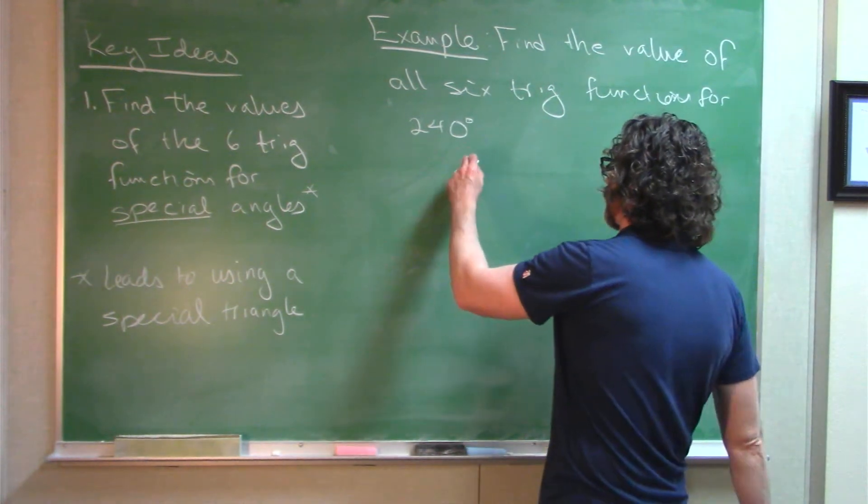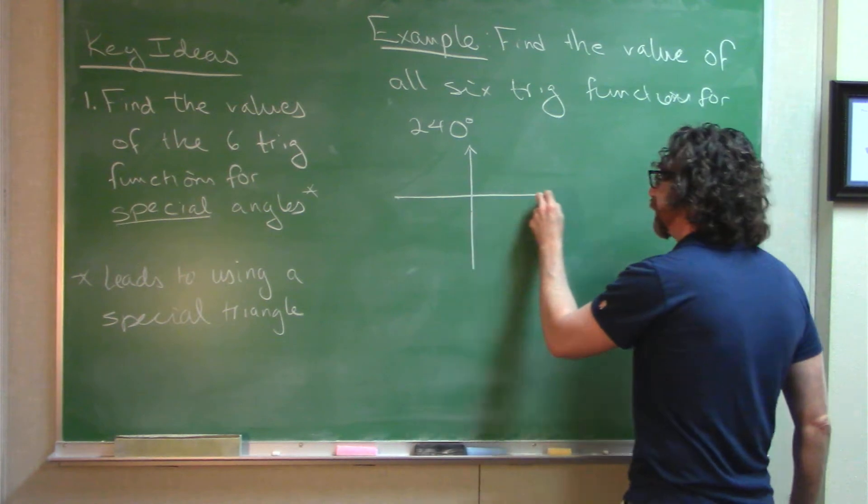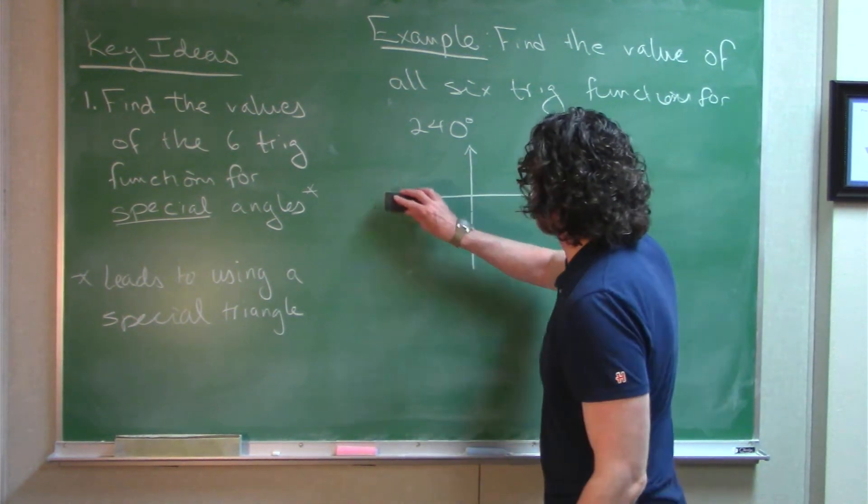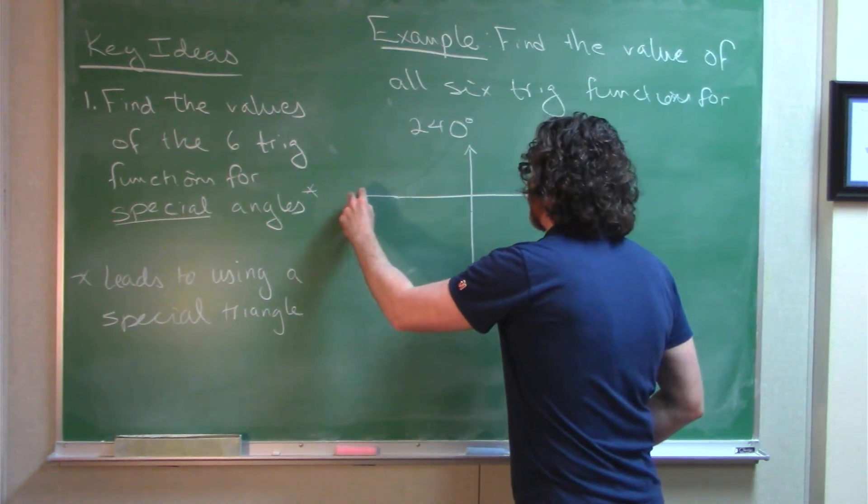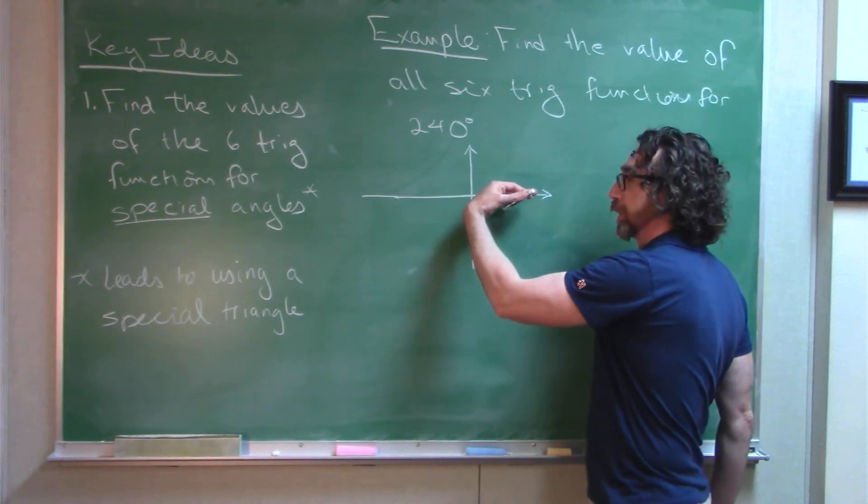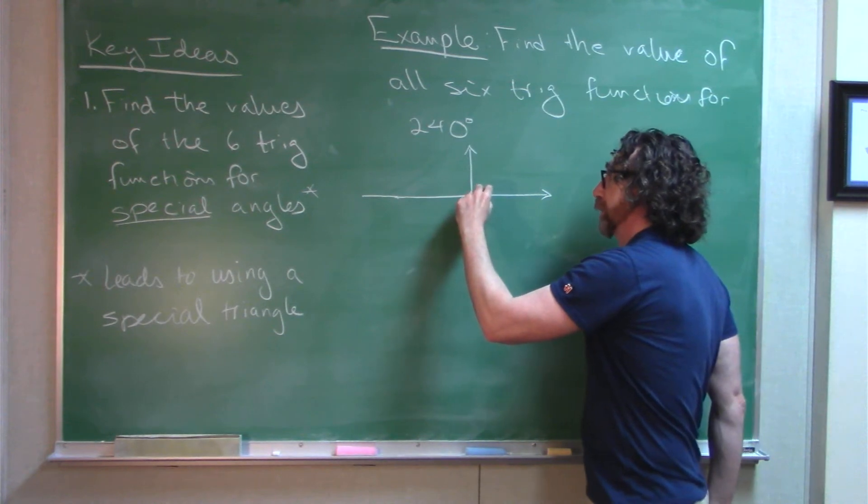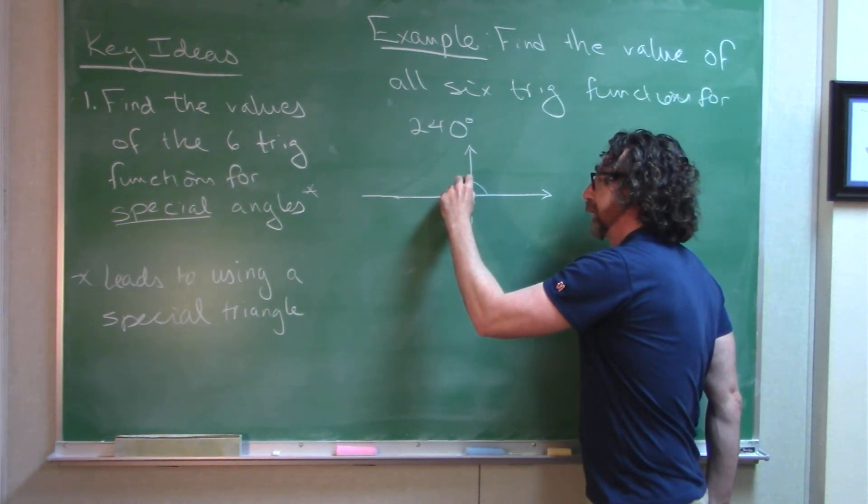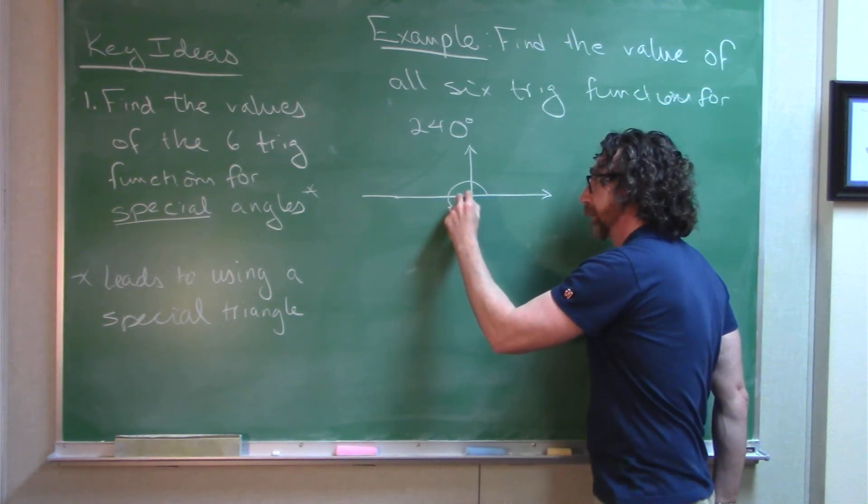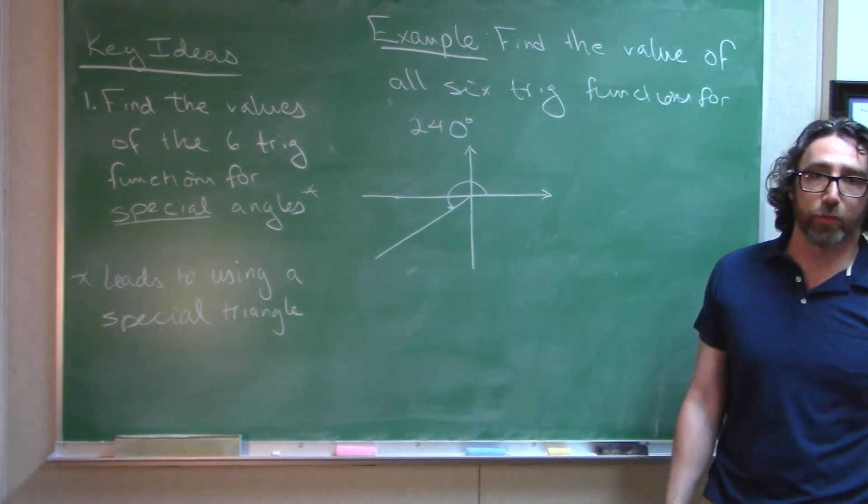So we look at this angle 240 and you might say, how could we have a triangle with 240 degrees in it, right? The angle sum is 180. Here's what I mean. Let's picture 240 degrees in standard position. Remember, we're starting with the positive x-axis, rotating counter-clockwise. Here we're at 90, 180.